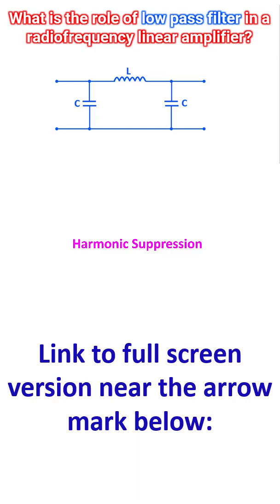Harmonics are multiples of your fundamental intended frequency. For example, if you are transmitting at 14 MHz, your amplifier will naturally produce smaller signals at 28 MHz, which is the second harmonic, or 42 MHz, which is the third harmonic, and so on.